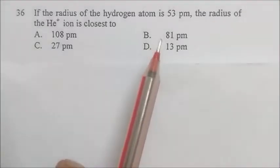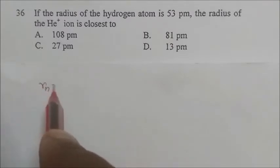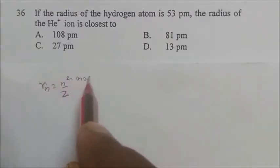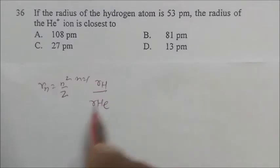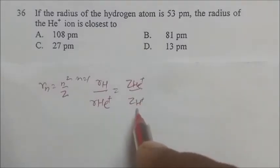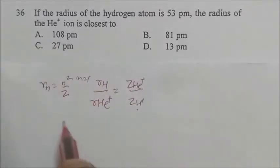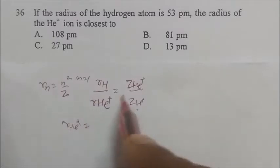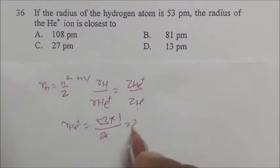If the radius of the hydrogen atom is 53 picometers, the radius of He+ is closest to what? The formula is radius of nth orbit ∝ n²/Z. For He+ (n=1, Z=2) versus H (n=1, Z=1): radius of He+ = 53 × (1/2) ≈ 26.5 picometers, which is approximately 27 picometers. The answer is C.